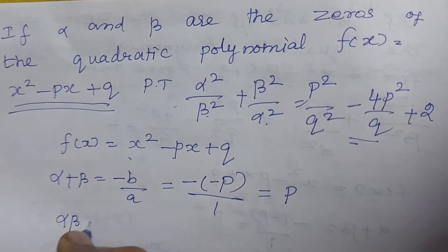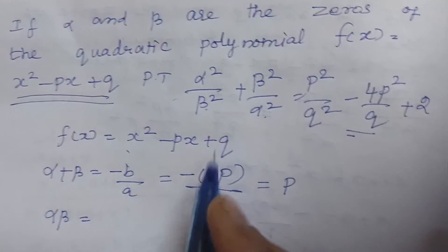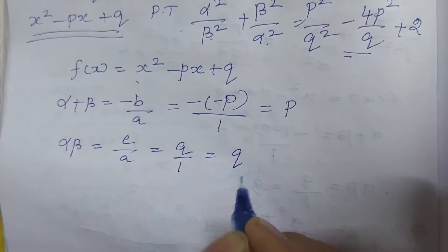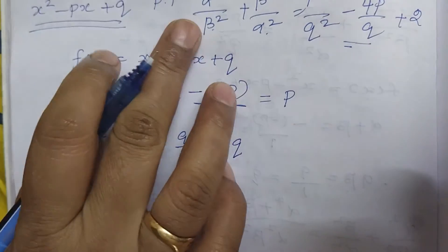Then next, alpha beta, that is product of the roots. Product of the roots equal to c by a. It is equal to q by 1, that is equal to q. So here we are going to use these conditions.